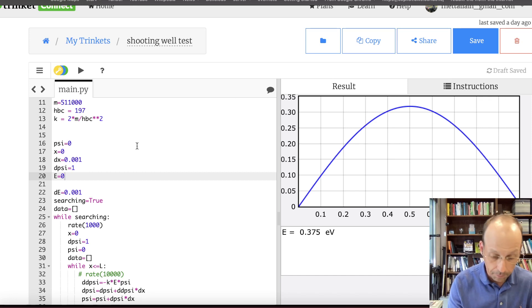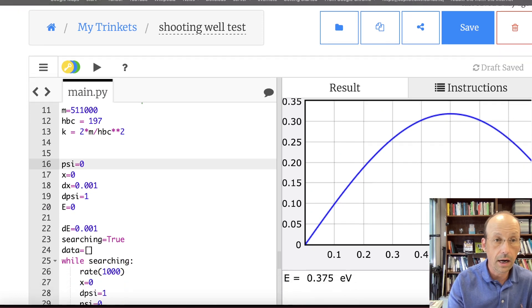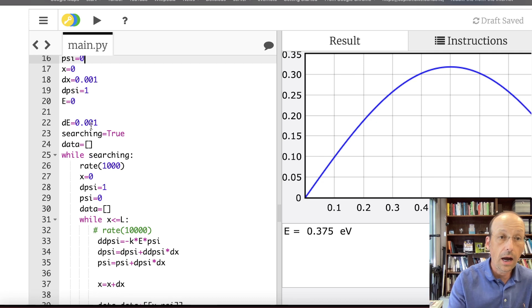So over here, let me make this a little bit bigger. So I have my initial conditions. Psi is zero. X is zero. Actually, I don't even need that. Here's the part that is important. Searching equals true. So I'm going to keep on looking for this until I find it. And then searching will be false and it'll stop.